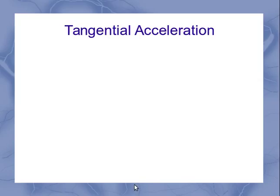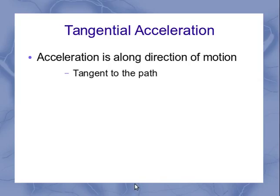So then we move to our tangential acceleration. Well, a tangential acceleration is when we have the acceleration along the direction of motion, or tangent to the path. So if I've got some sort of curved path over here, at any point along the path, I can define the direction of motion. And if the acceleration is also in that direction, it's a tangential acceleration.